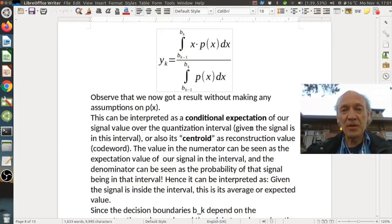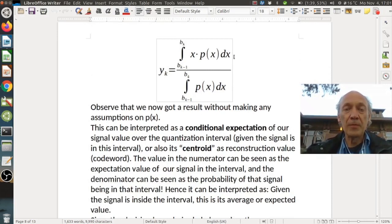That's an interesting result because this is the expectation of x over this interval, right? This interval between b_{k-1} to b_k. And this is the probability of the interval itself. Basically this y_k is a conditional probability. It's the expectation of x in this interval given that we are in this interval.